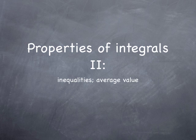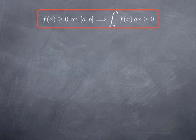Now we're going to go over more properties of the integral, particularly properties relating to inequalities and average value of a function. The first observation is that if I have a continuous function that is greater or equal to 0 on an interval [a,b], then its integral over that interval is going to be greater or equal to 0. That is quite clear from the geometric interpretation, because the integral is simply the area under the graph of the function over that interval, and that's certainly non-negative.